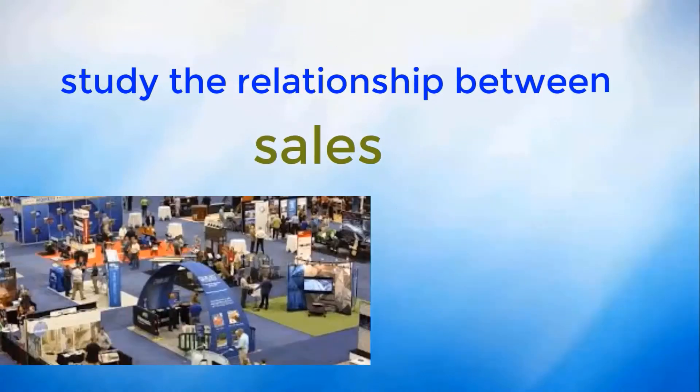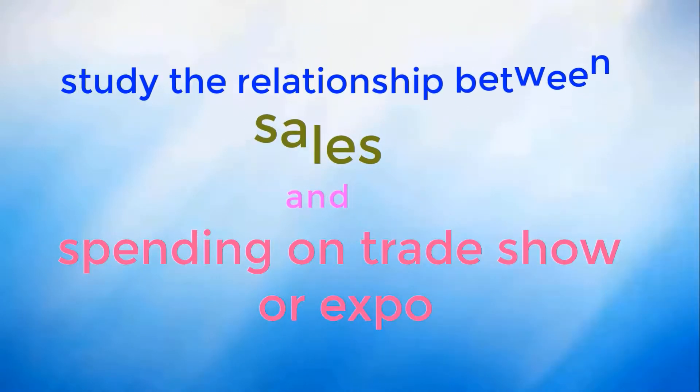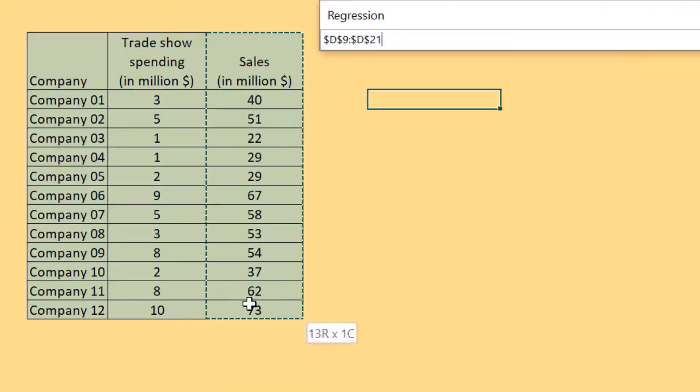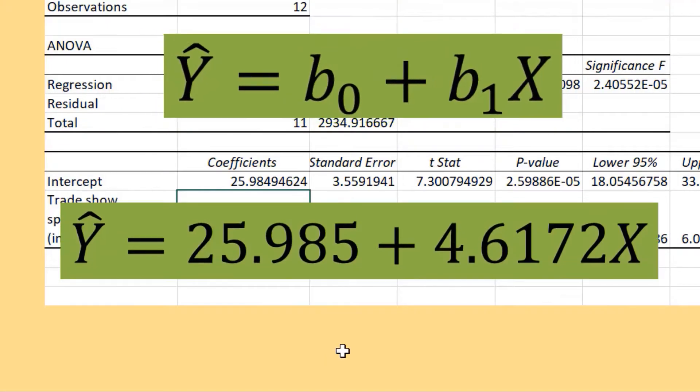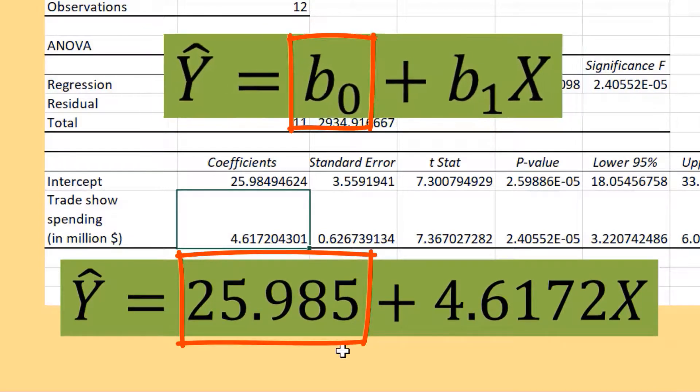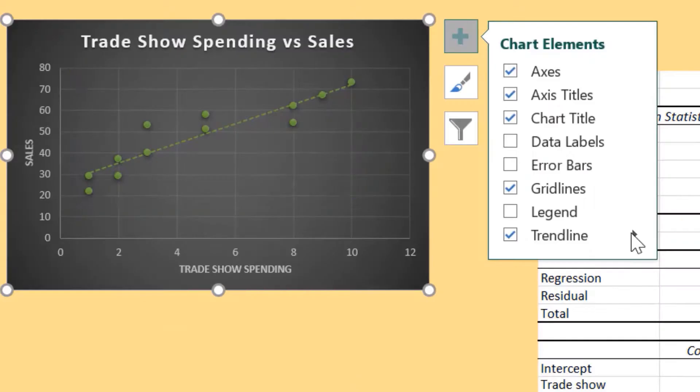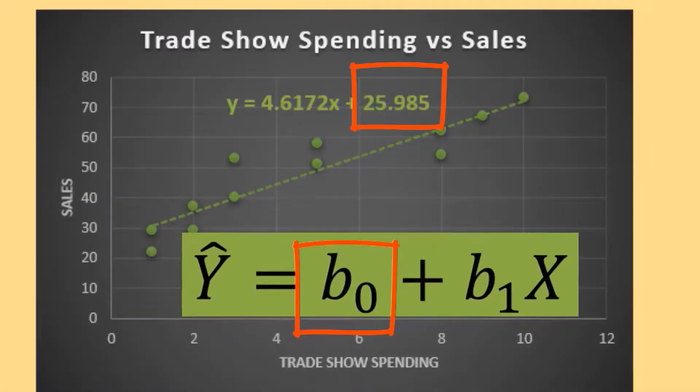We studied the relationship between sales and retail spending from a sample of 12 companies. Using Excel Regression Analysis, we obtained the equation of the line of best fit: 25.985 plus 4.6172 times X. Using Excel Scatterplot, we obtained the same result.